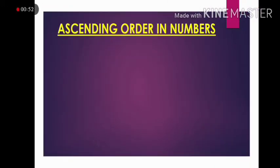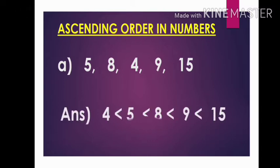Let us see some examples of ascending order taking some numbers. Here are some numbers like 5, 8, 4, 9 and 15. When we have to arrange these numbers in ascending order we will take the smallest one. So it is 4 then 5 then 8 then 9 and then 15. It is in ascending order which is increasing order.